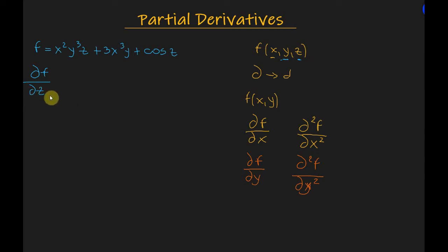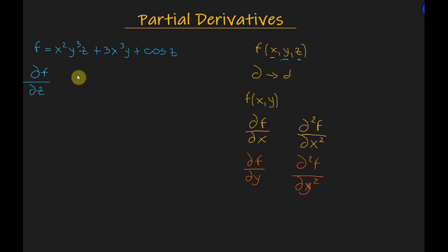As we said earlier, when computing partial derivatives of a function with respect to one variable, all other variables are treated as constants. Therefore, to find the partial derivative of f with respect to z, the other variables x and y will be held fixed.